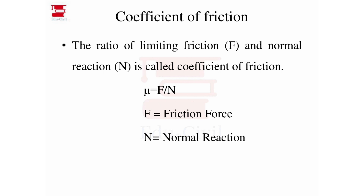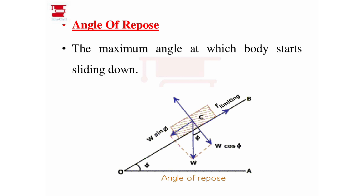The angle of repose is equal to the angle of friction. The angle of repose is related to the inclined plane. In an inclined plane, the angle of repose is the maximum angle at which the body starts to slide down. At that particular inclination, the resistance equals the limiting friction, and that inclination is the maximum angle at which the body just begins to slide down.